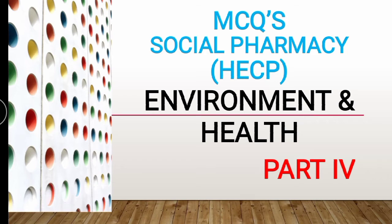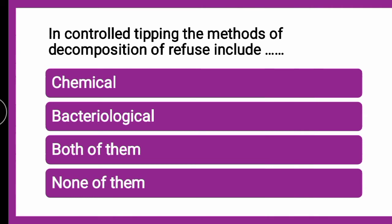Moving to the first MCQ: In controlled tipping, the method of decomposition of refuse includes which of the following? As we know, controlled tipping is also known as sanitary landfill. In sanitary landfill, a trench is dug, waste is loaded in layers, and at the end of each day the waste is covered with a layer of earth. This is called controlled tipping. The correct answer is that it includes both chemical and bacteriological decomposition.